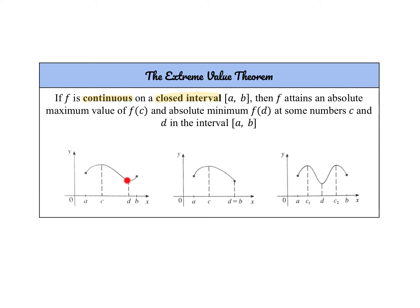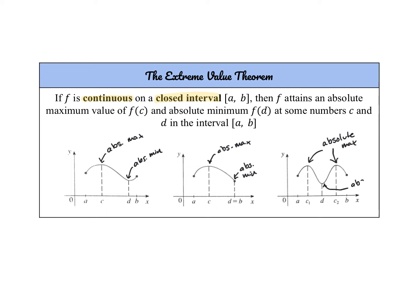If you look at this first graph, it is a closed interval and continuous, and we can see an absolute max and an absolute min. In the next example, here would be our absolute max and here our absolute min — it's okay that it's on an endpoint. In the third graph, we actually have two points where we have an absolute max: f of c1 equals f of c2, so both share the absolute maximum value. And f of d is our absolute minimum.